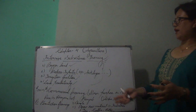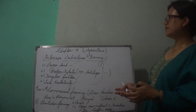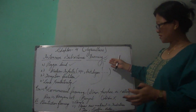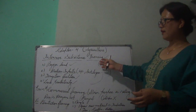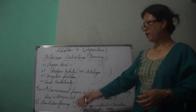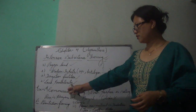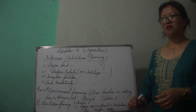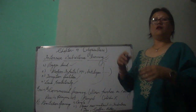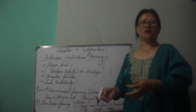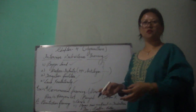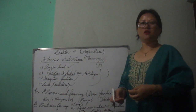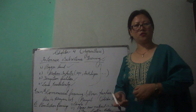Altogether, we have discussed intensive subsistence farming with its two types: commercial farming and plantation farming. If you want notes on what we discussed today, you can check the description box. Thank you.